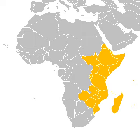East Africa or Eastern Africa is the eastern region of the African continent, variably defined by geography. In the United Nations Statistics Division Scheme of Geographic Regions, 20 territories make up Eastern Africa.